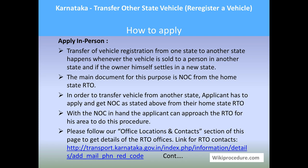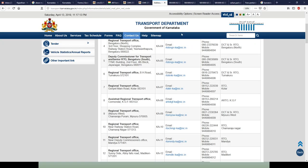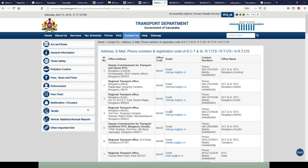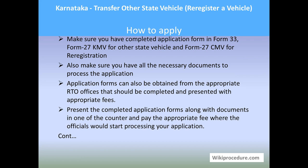If you don't know your local RTO office, please use the link provided here to reach the contact page of the Karnataka state portal to get the local RTO address. Make sure you have completed Form 33 and Form 27 respectively, and that you have all the necessary documents to process the application. Application forms can also be obtained directly when you visit the RTO office — collect the form, fill it in, attach all documents, and submit to an officer there.